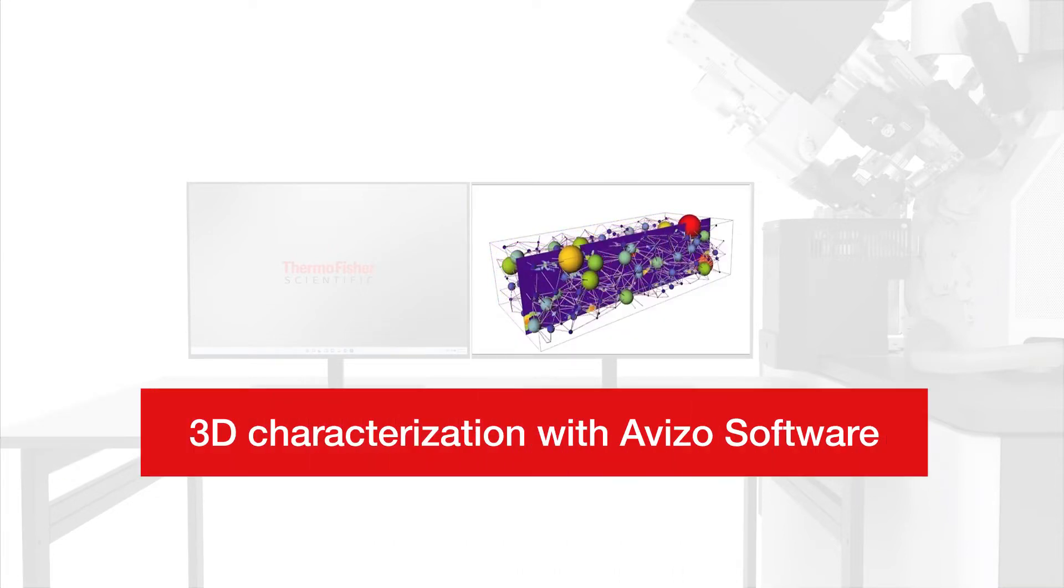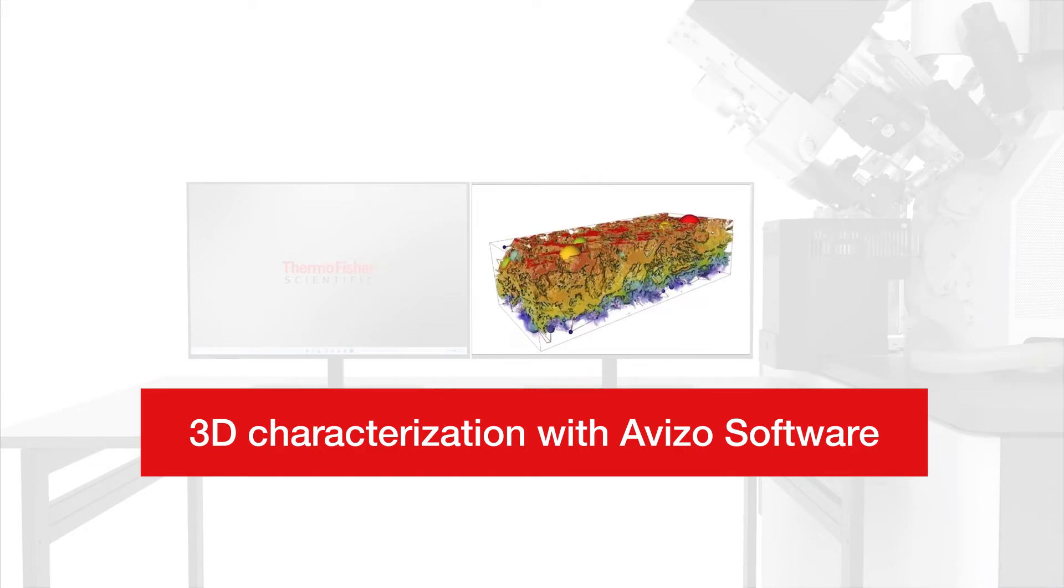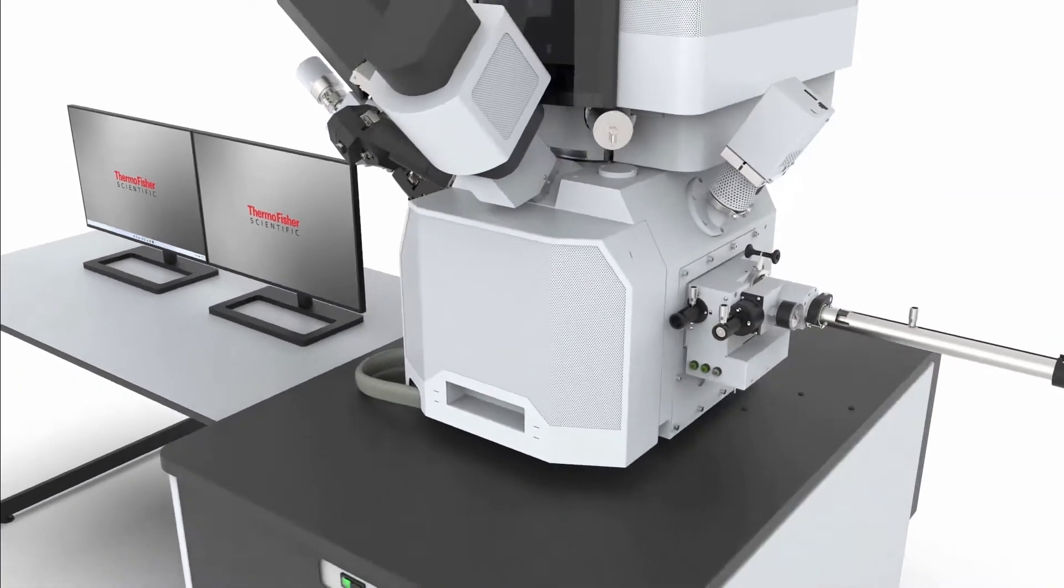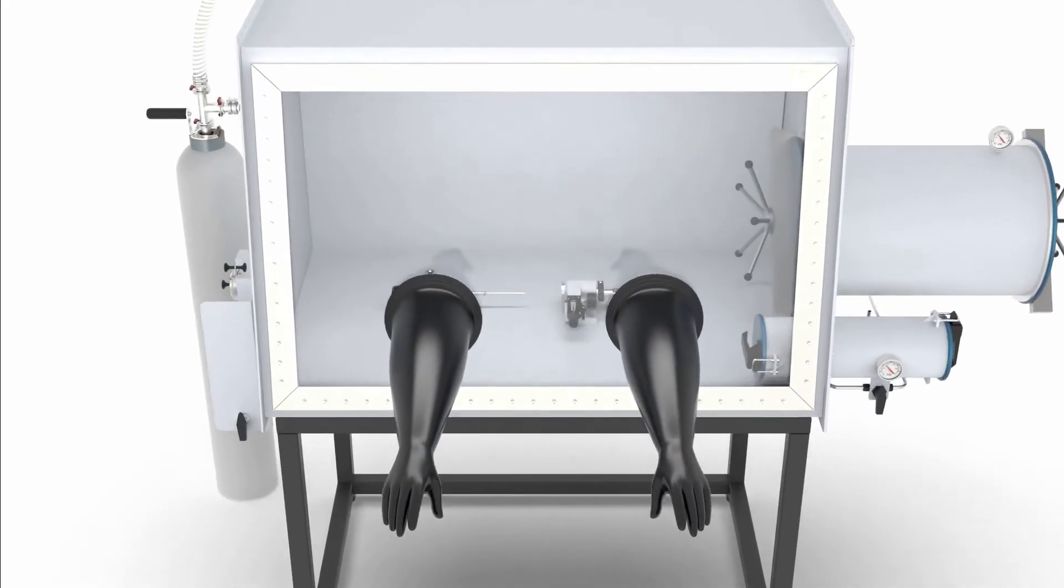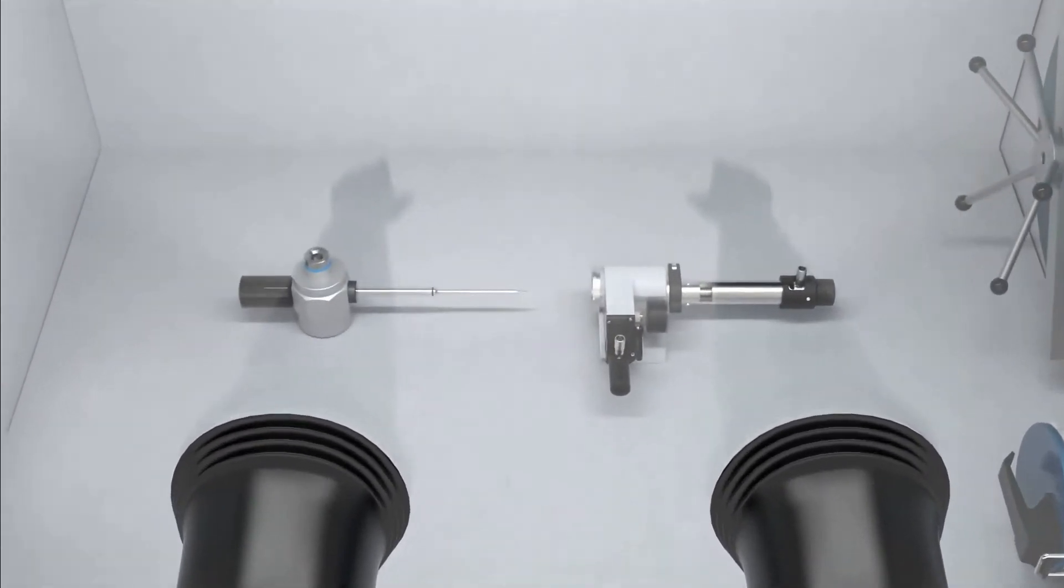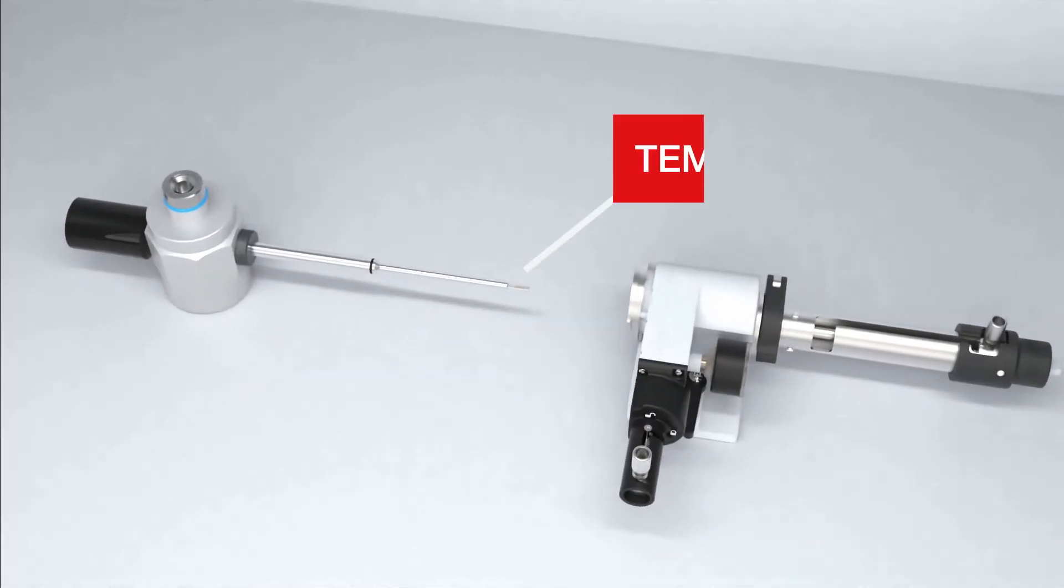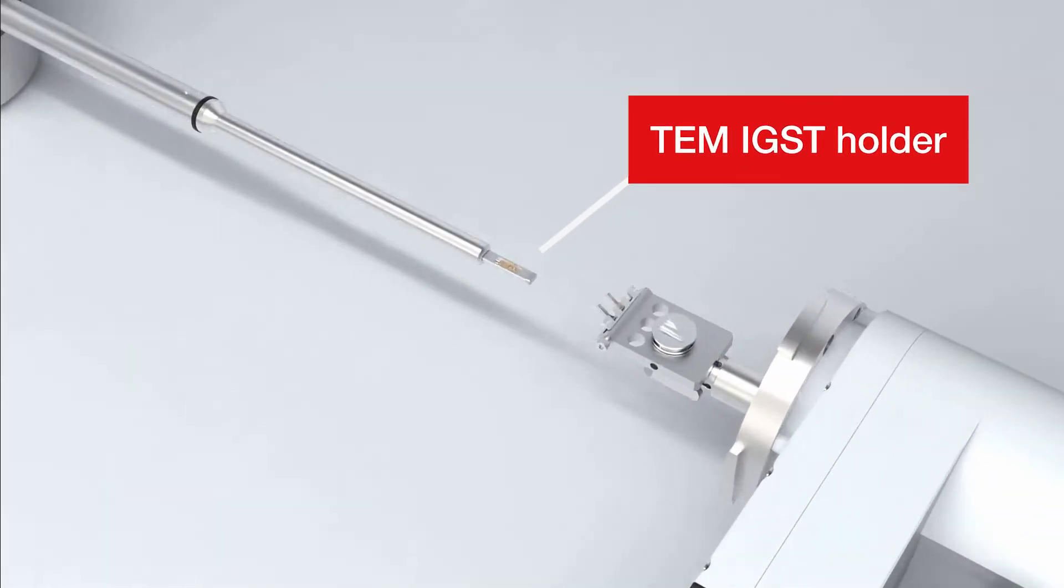3D characterization with our Aviso software can provide a lot more information than 2D imaging on battery transport properties like tortuosity. Let's look at the TEM sample of lithium we prepared in our dual beam system and its transfer to the TEM holder, all under an inert gas environment.